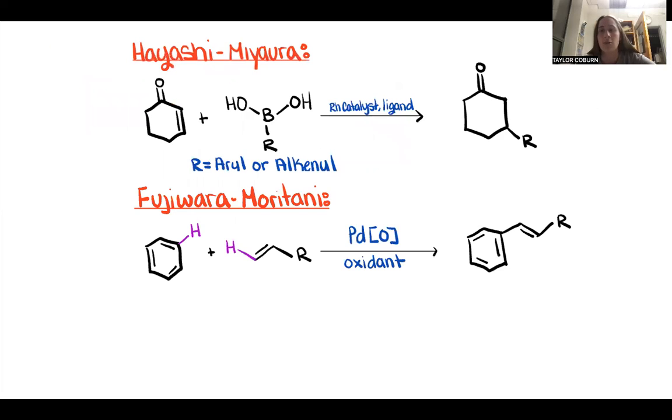So these reactions both make carbon-carbon bonds, and they seem kind of similar. They're actually very different. So starting off with our substrate, for the Hayashi-Miyaura reaction, we have an alpha-beta unsaturated carbonyl, where in the Fujiwara-Moritani reaction, we have any aromatic compound.